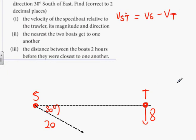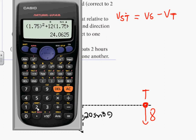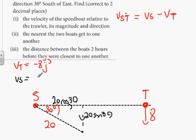I know that VT is -8j. VS, we're going to work out as 20 cos 30 in this direction and 20 sin 30 going that direction. So the velocity of the speedboat is 10 root 3 i minus 10j.